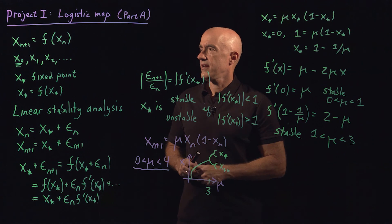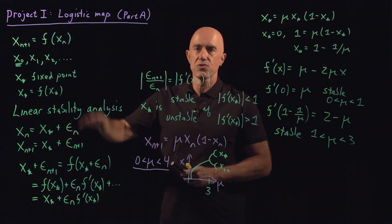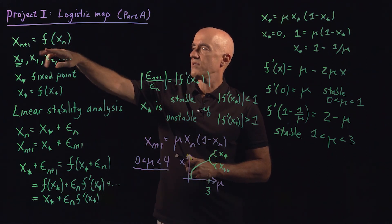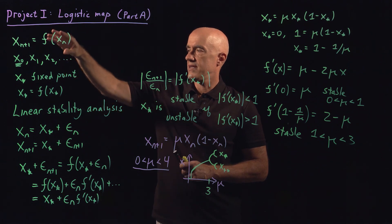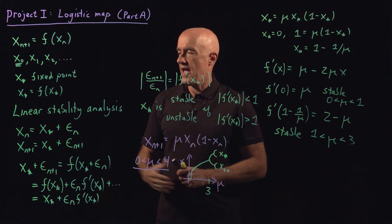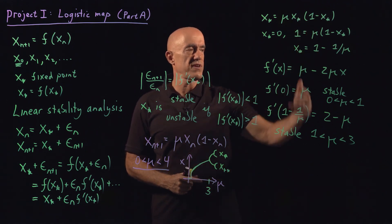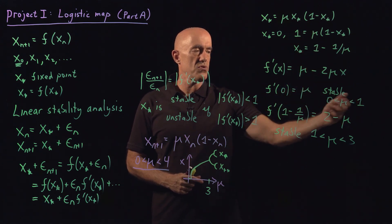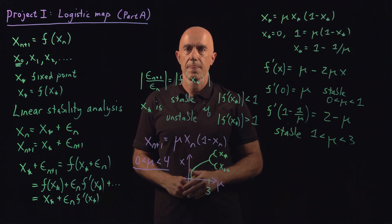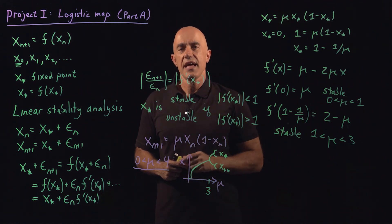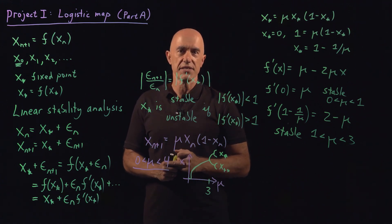To summarize: you're going to compute the bifurcation diagram of the logistic map as your project. The general theory covers one-dimensional maps — find fixed points and perform linear stability analysis. For the logistic map, there are two fixed points: the zero fixed point is stable when mu is less than 1, and the 1 minus 1 over mu fixed point is stable when mu is between 1 and 3. Then interesting things happen when mu is greater than 3, and that's what the project is about — computing what happens. Thanks for watching.